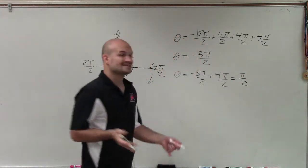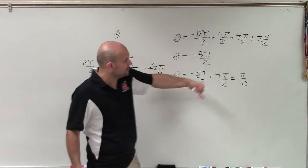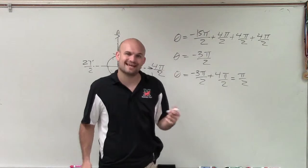So the smallest coterminal angles that's both negative and positive is going to be negative 3 pi over 2 and pi halves. Thanks.